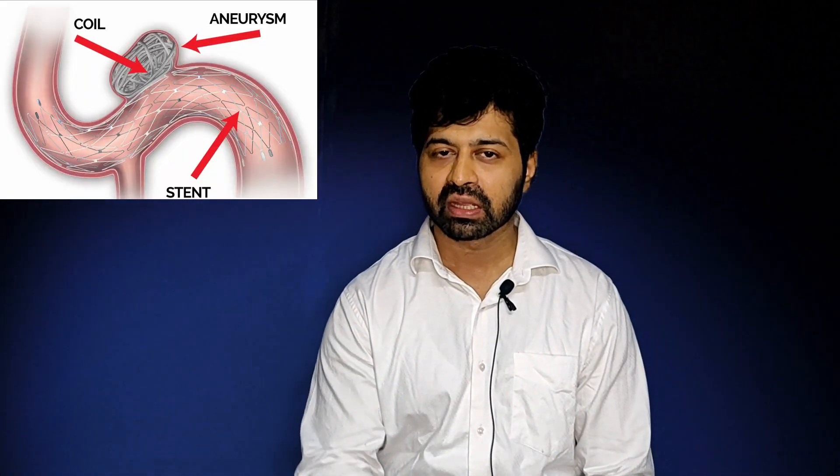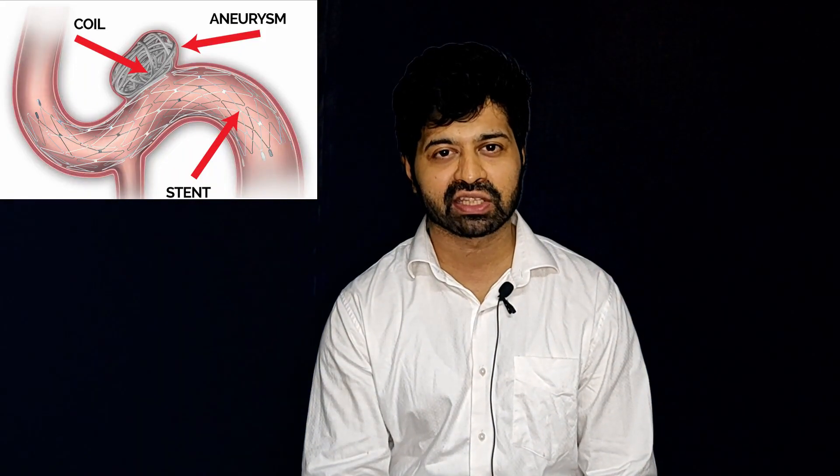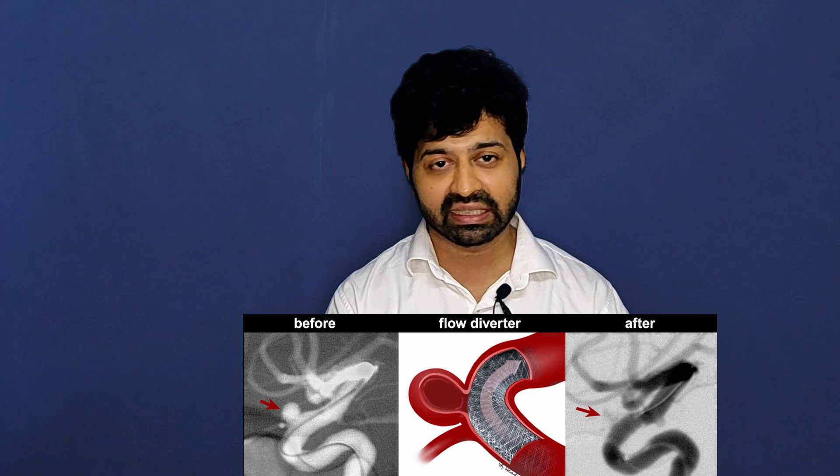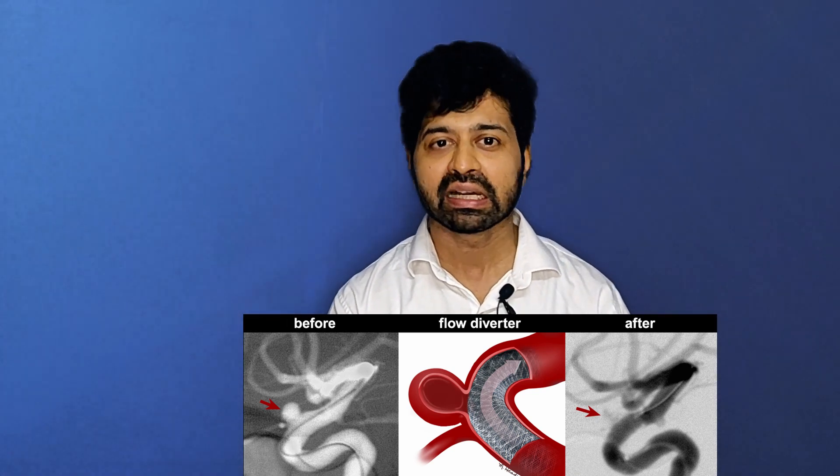In endovascular coiling, we puncture the femoral artery, pass a catheter inside the blood vessel, reach the site of the aneurysm, and fill the aneurysm with coils from inside, hence securing it. Sometimes, depending on the size and shape of the aneurysm, a stent may have to be placed to prevent the coil from slipping back into the normal vessel. Or sometimes a different device called a flow diverter may have to be placed. Discussing the procedure and its complications in detail would make this video too long, so I'll have a separate video about the endovascular treatment of aneurysms.